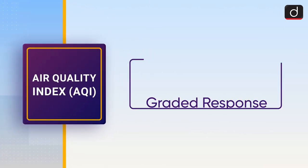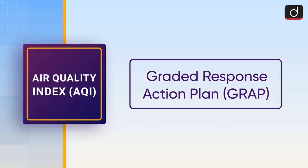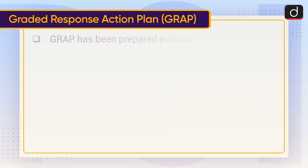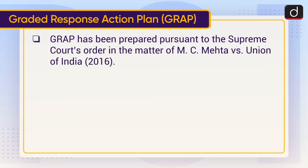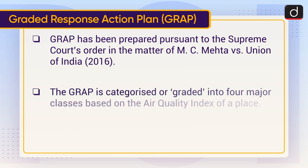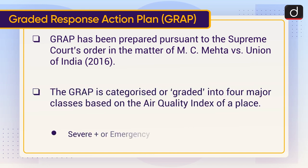Now let's discuss the Graded Response Action Plan, or GRAP. GRAP has been prepared pursuant to the Supreme Court's order in the matter of MC Mehta versus Union of India, 2016. GRAP is categorized into four major classes based on the Air Quality Index of a place.